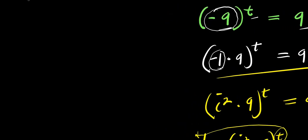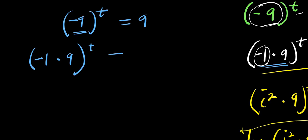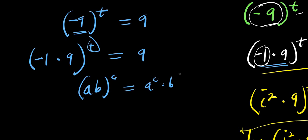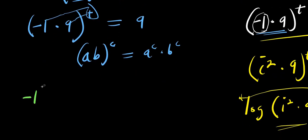Now let's consider the second method. We copy the problem again: negative 9 raised to the power of t equals 9. We again express negative 9 as negative 1 times 9, raised to the power of t, equals 9. The next step is to distribute this exponent — since for (a times b) to the power of c, this equals a to the c times b to the c — so we get negative 1 to the power of t times 9 to the power of t, equals 9.